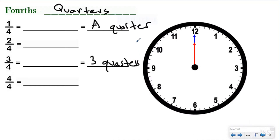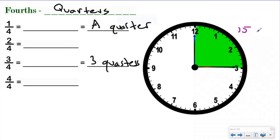Let's take a look at what happens when we split our clock face into four equal groups. Here would be my first fourth. In this one-fourth, we have five, ten, fifteen minutes. So we know that one-fourth of my clock or one-fourth of an hour is going to be 15 minutes.